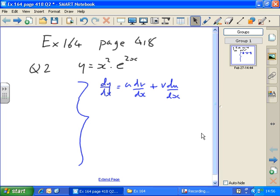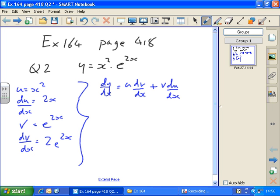Two functions again, one multiplied by the other. So I let u equal x squared, which means that du by dx equals 2x, and v equals e to the 2x, which means that dv by dx equals 2e to the 2x, from the table of differentials.